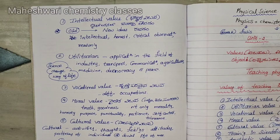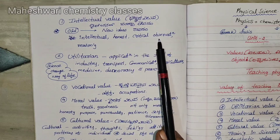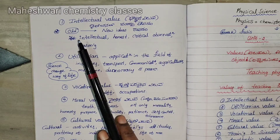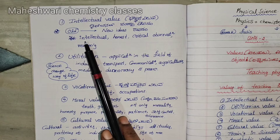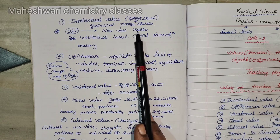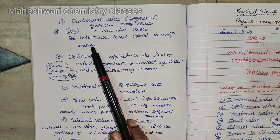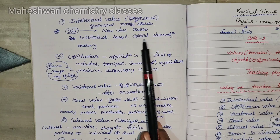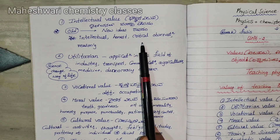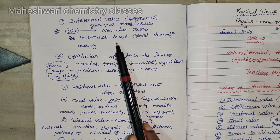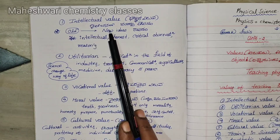Intellectual value is the most important one. It involves developing new ideas and patterns. Intellectual value includes honest, critical observation, reasoning and developing new ideas. This belongs to intellectual value.